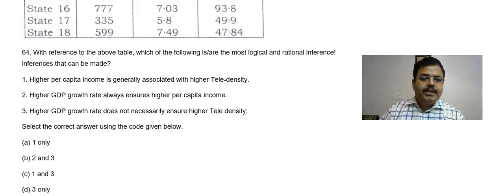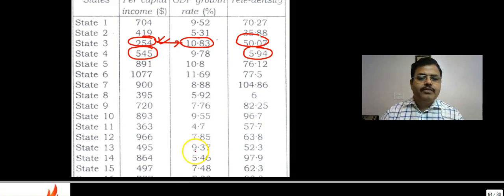Now the third one: higher GDP growth rate does not necessarily ensure higher tele-density. Yes, this is correct, which is what we have discussed. So the answer to this question is three. Got it?